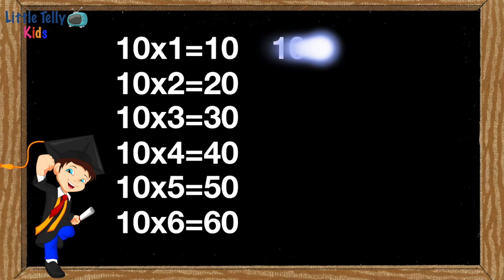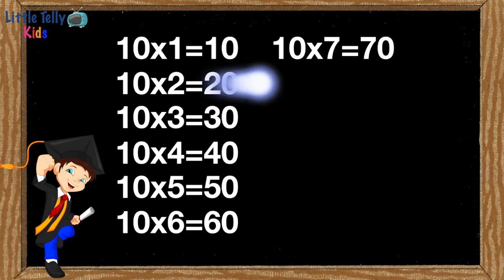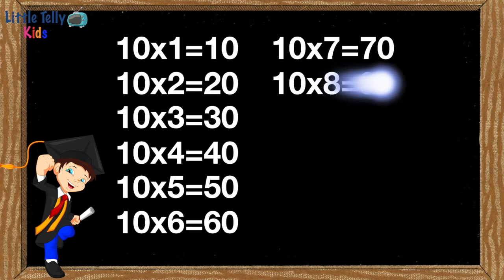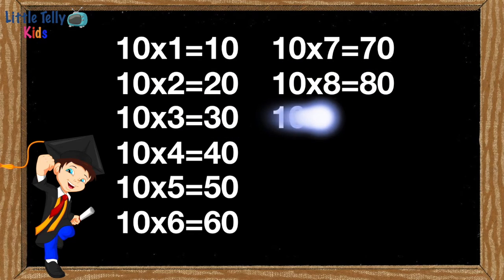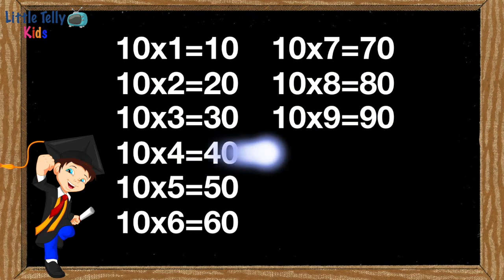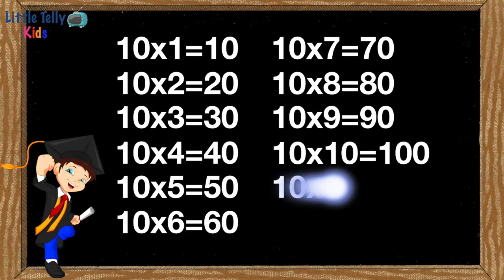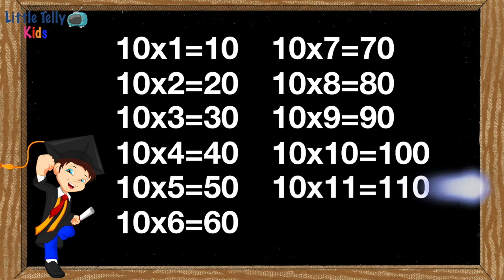Ten sevens are seventy. Ten eights are eighty. Ten nines are ninety. Ten tens are one hundred. Ten elevens are one hundred and ten.